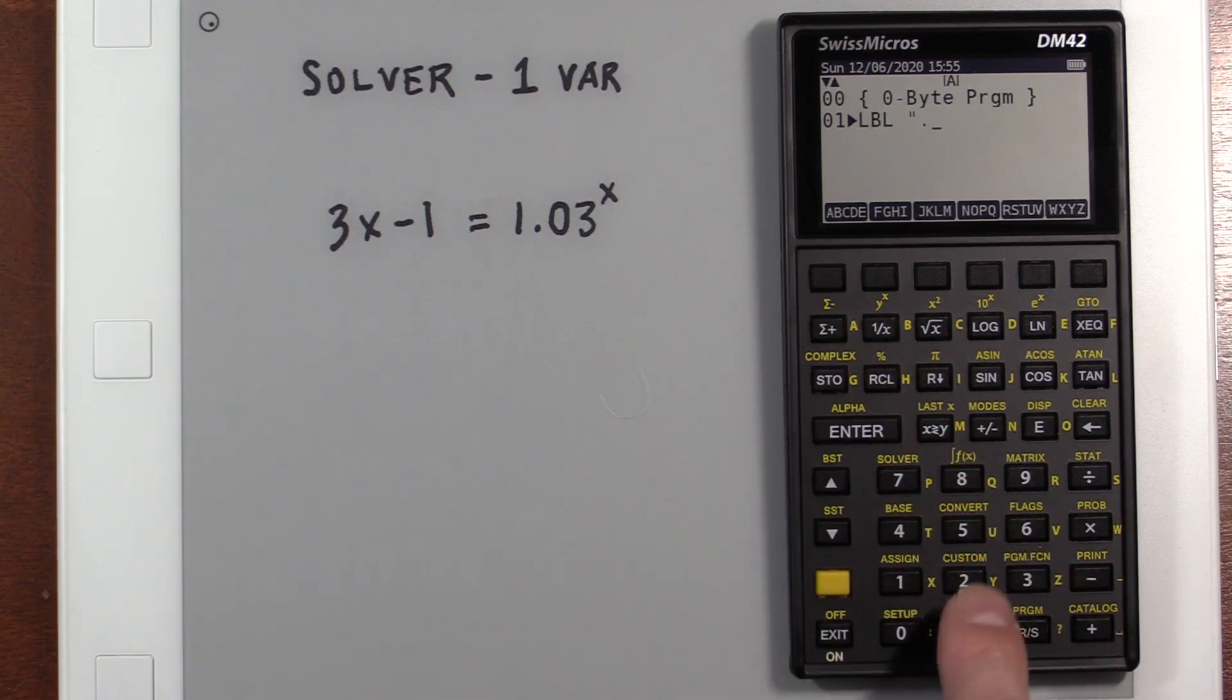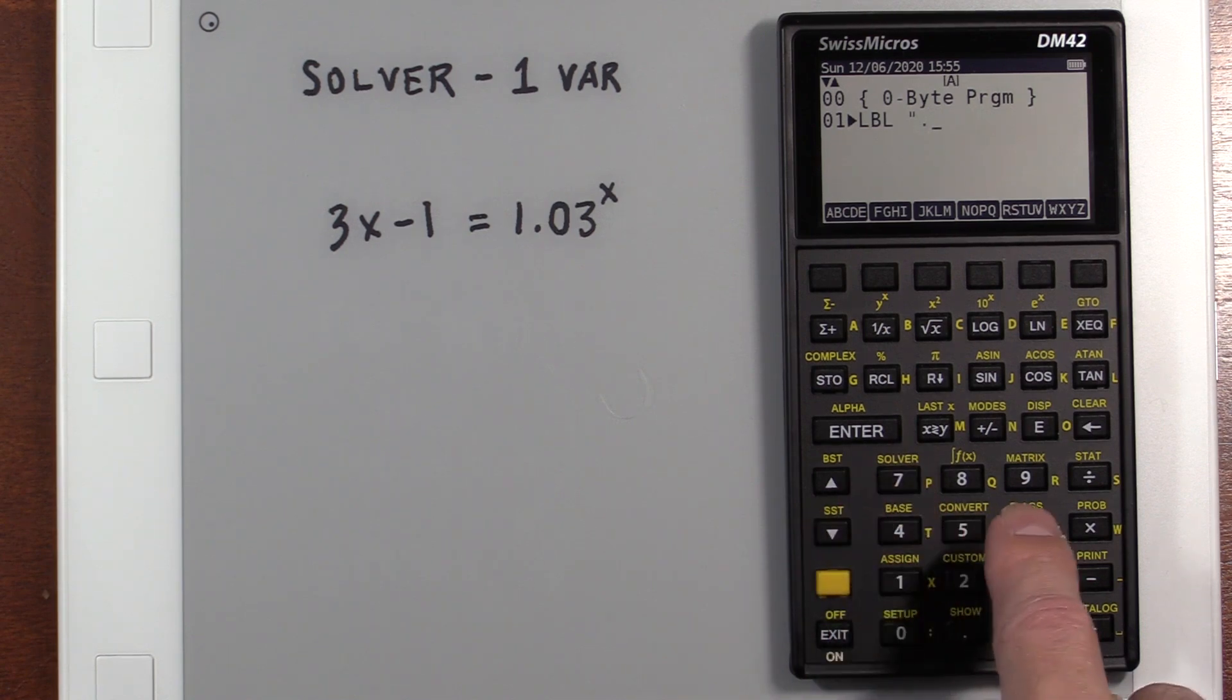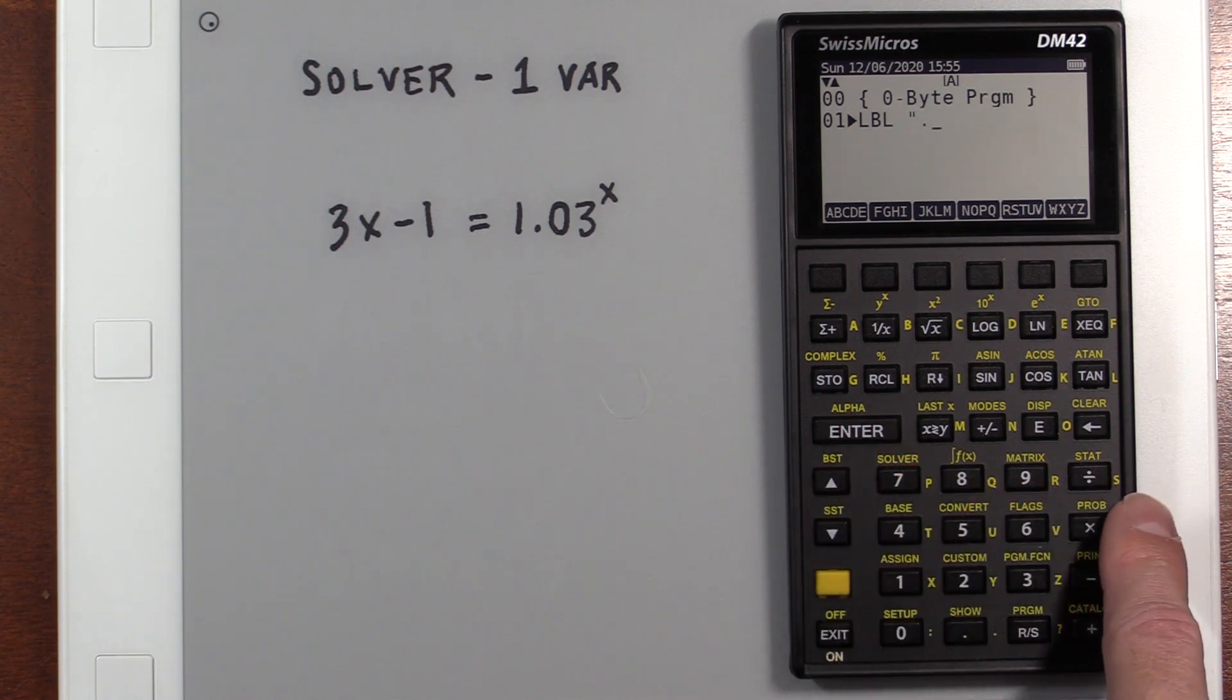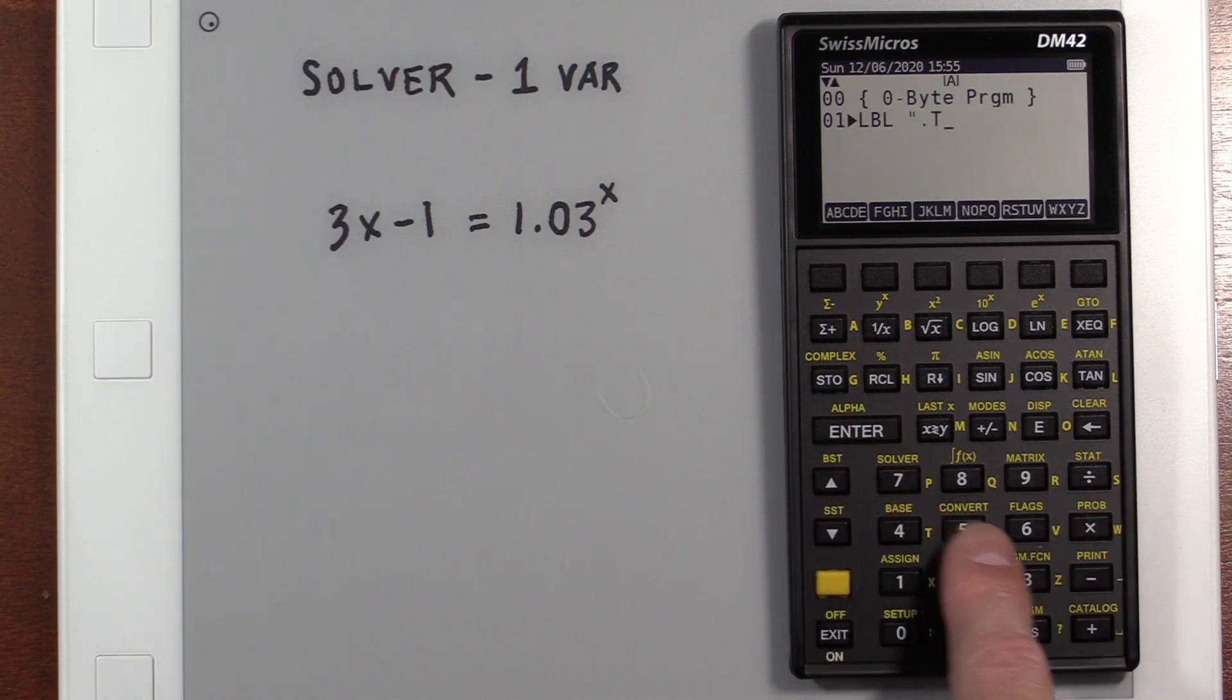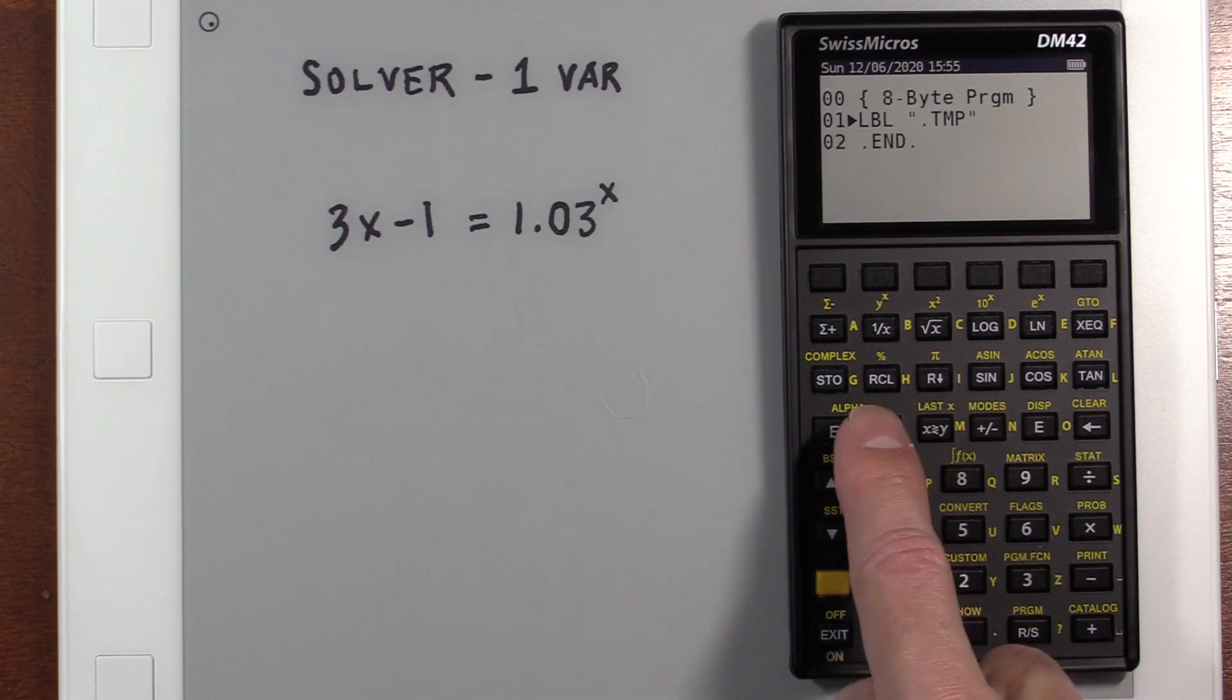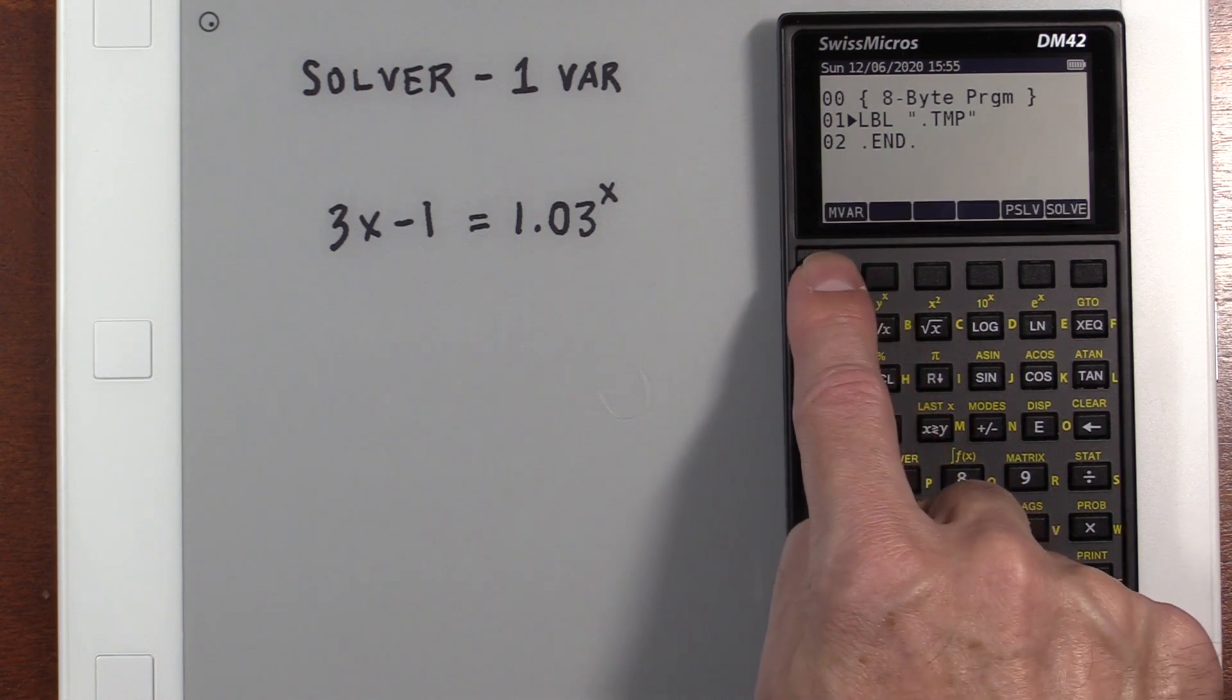Solver. I tend to put a period in front if it's going to use the solver, so that's just so I can differentiate the different types of programs. We'll call this temp again, or this one's dot TMP. And on this, when you're in solver mode, you've got to declare your variables.